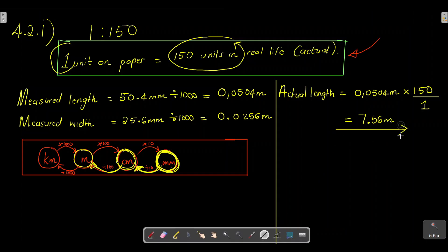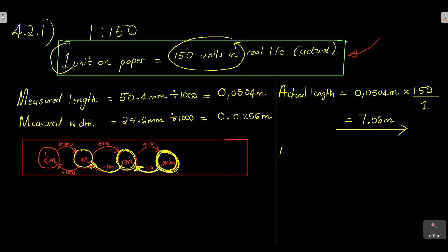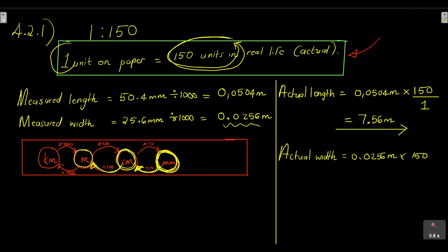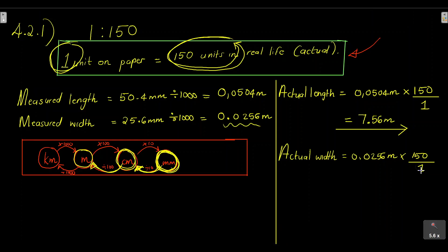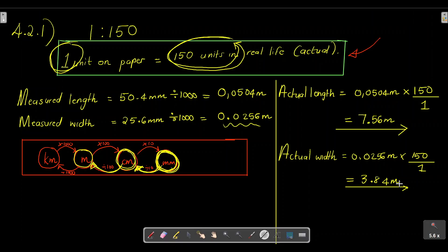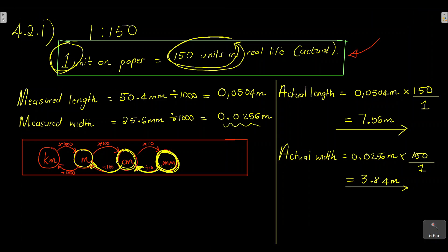For the actual width, we do the same thing: actual width = 0.0256 meters × 150 ÷ 1. Punching this into your calculator gives you that the actual width of this garage is equal to 3.84 meters. And we are basically done with question 4.2.1 — I hope that was nice and easy, especially if you watched the previous video tutorial.